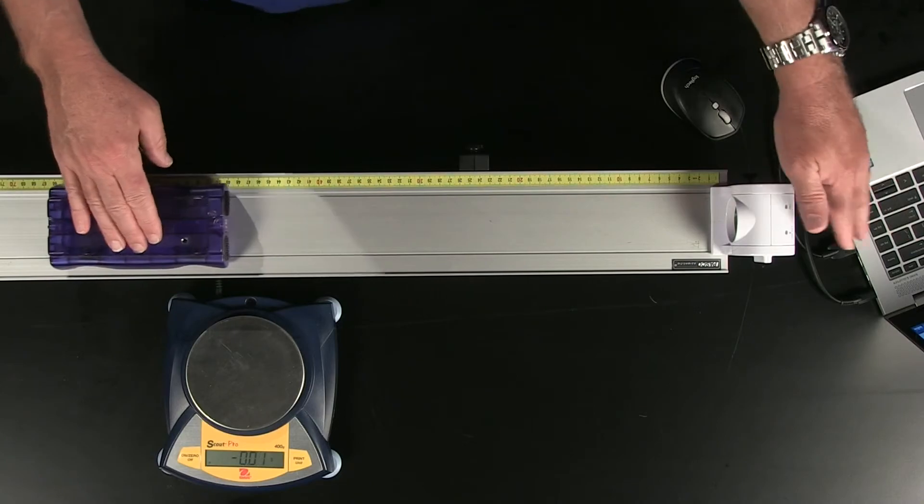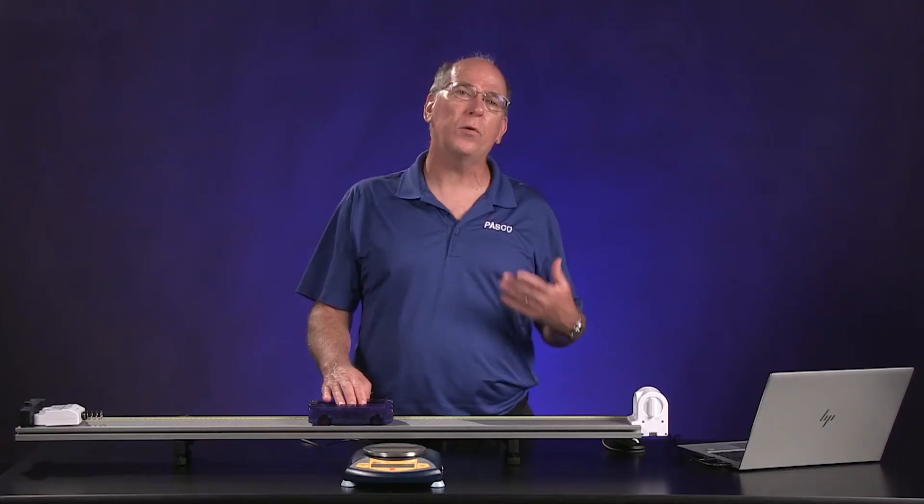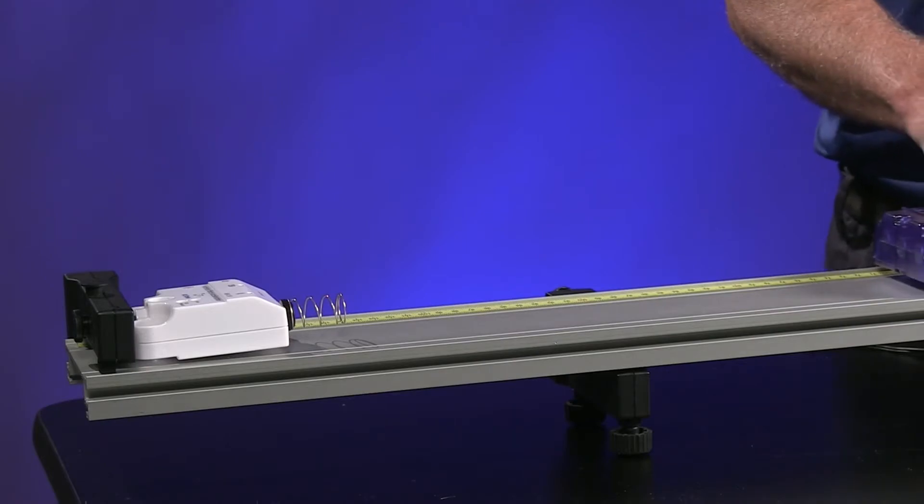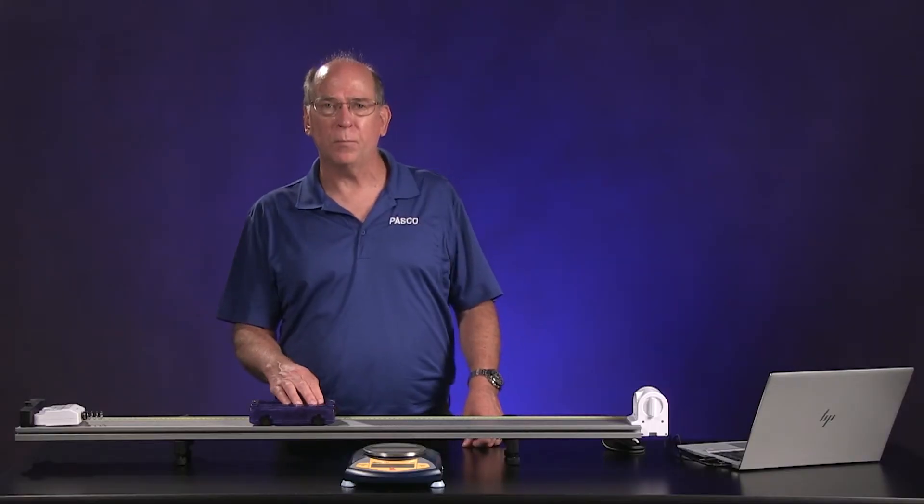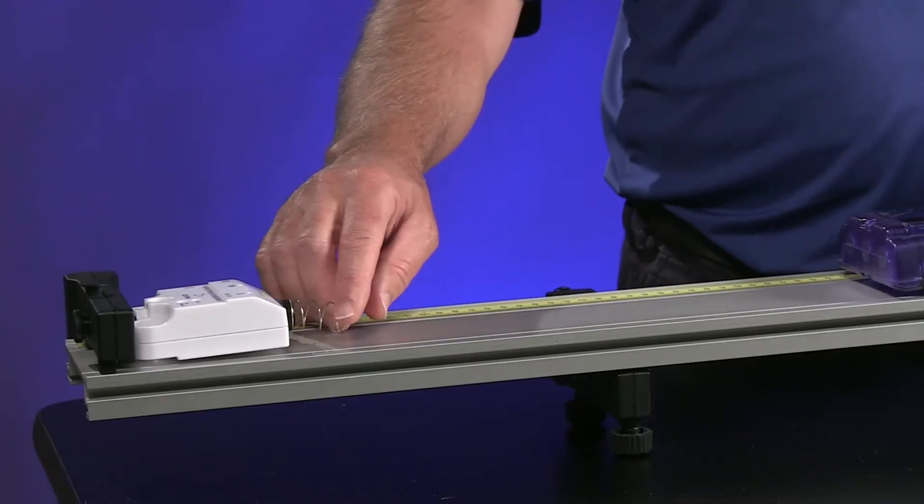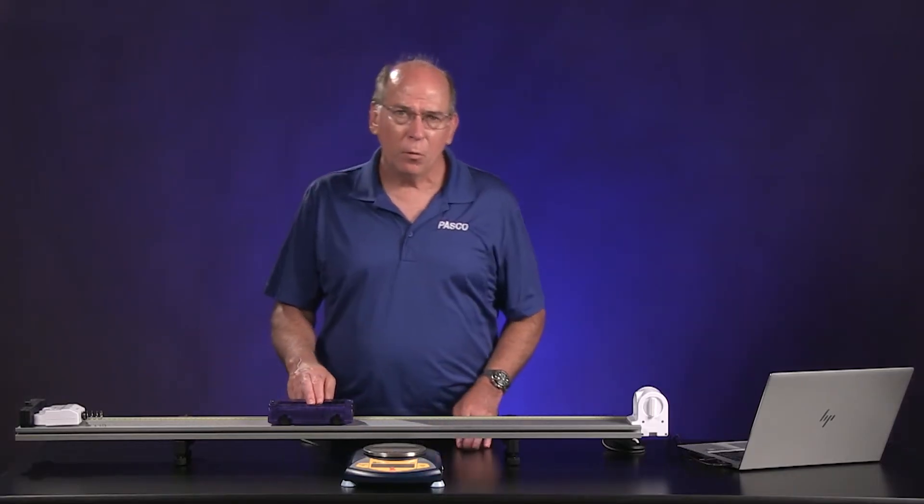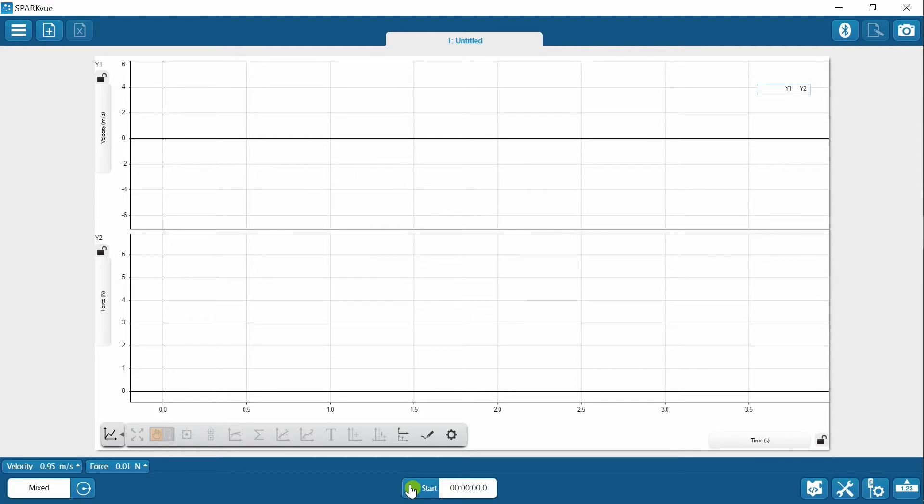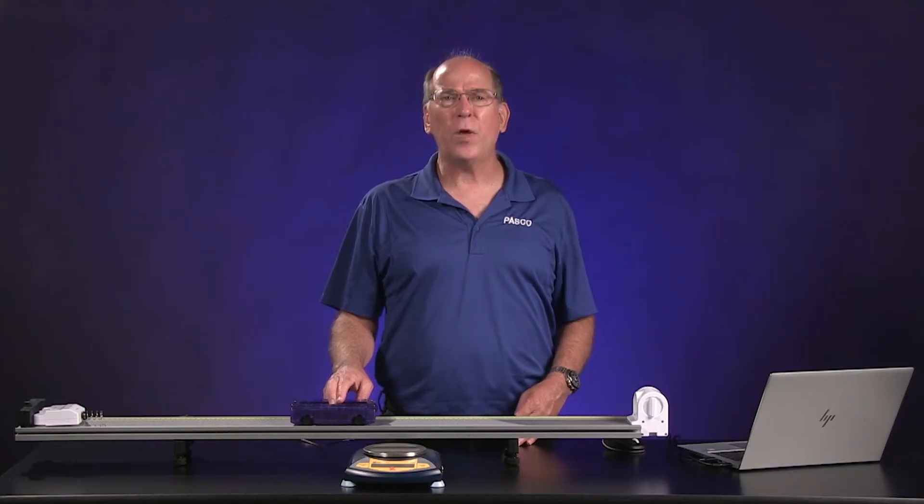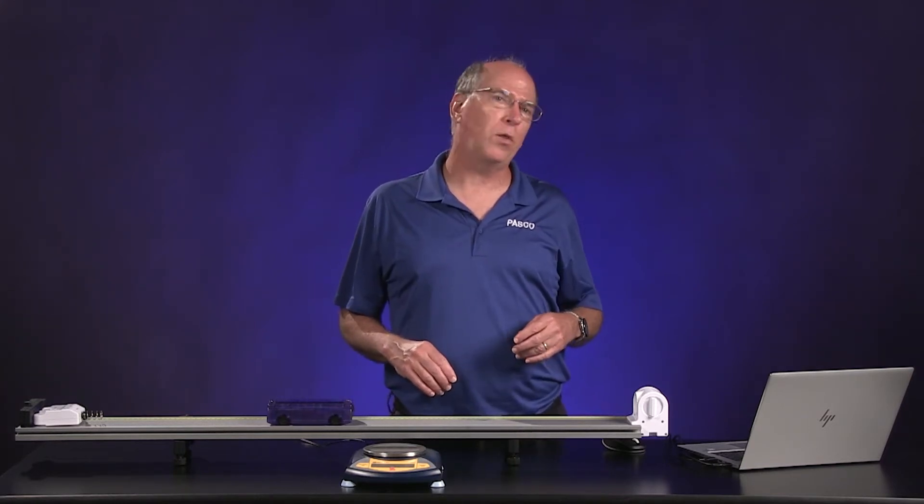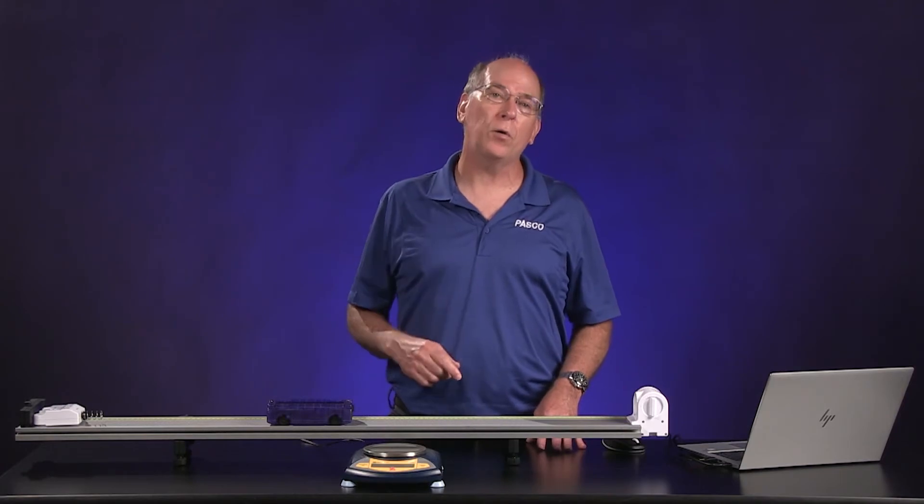This motion sensor will measure the velocity of the cart before, during, and after the collision. The force sensor will measure the force on the cart during the collision. We attach the spring to the force sensor to make the collision last a little longer. We've configured SparkView to display velocity versus time and force versus time on a graph.